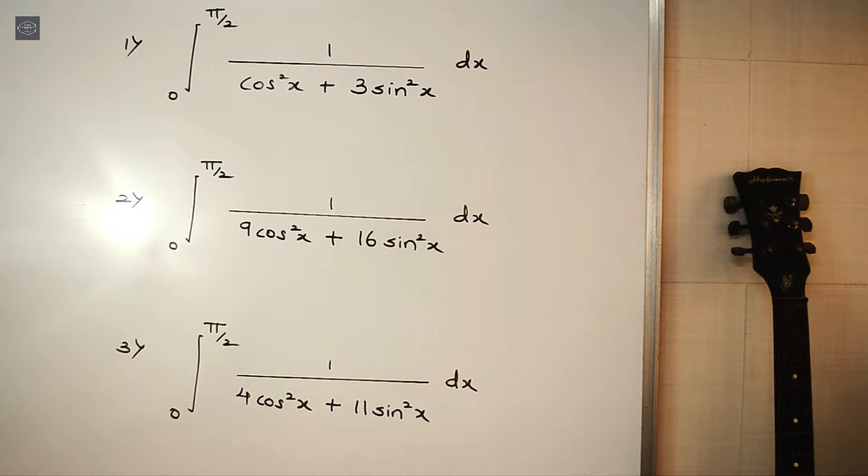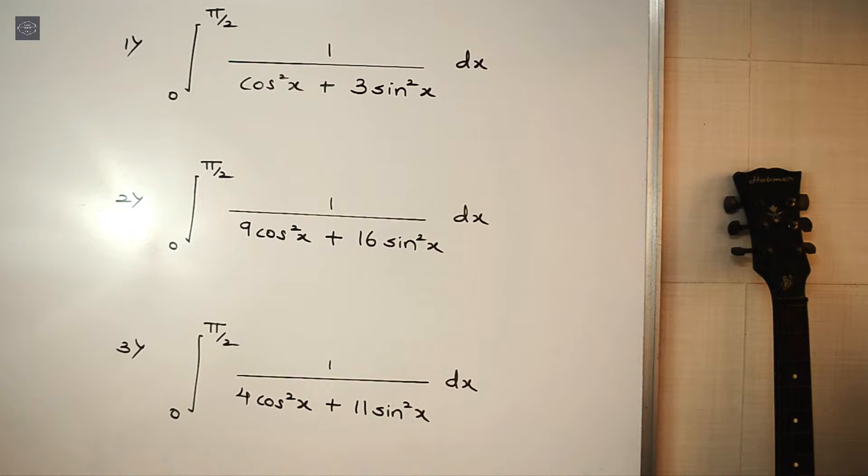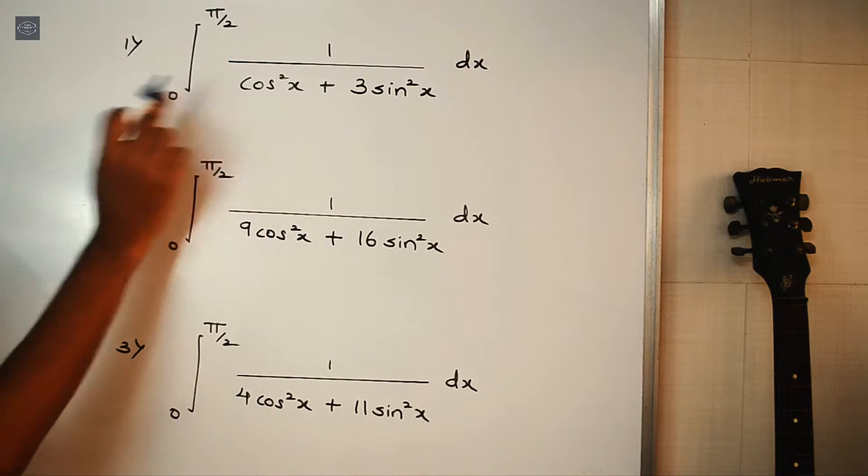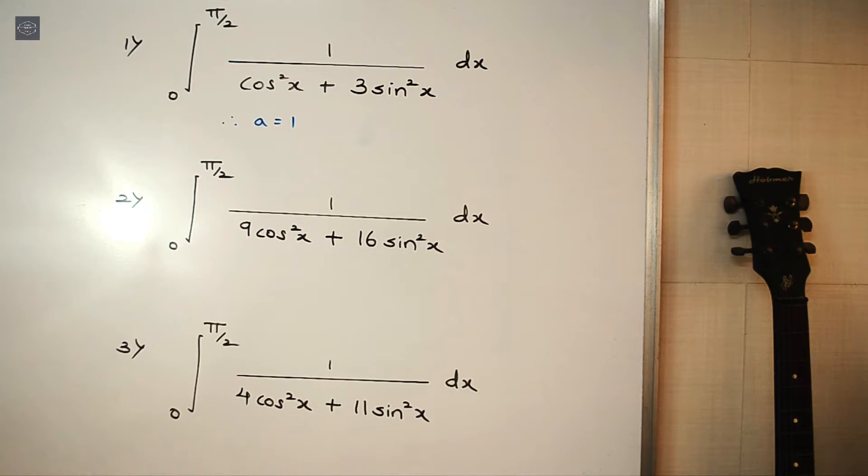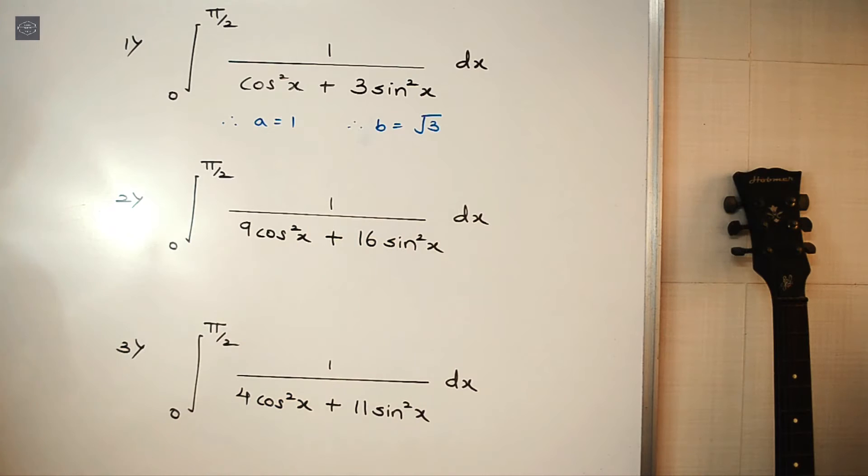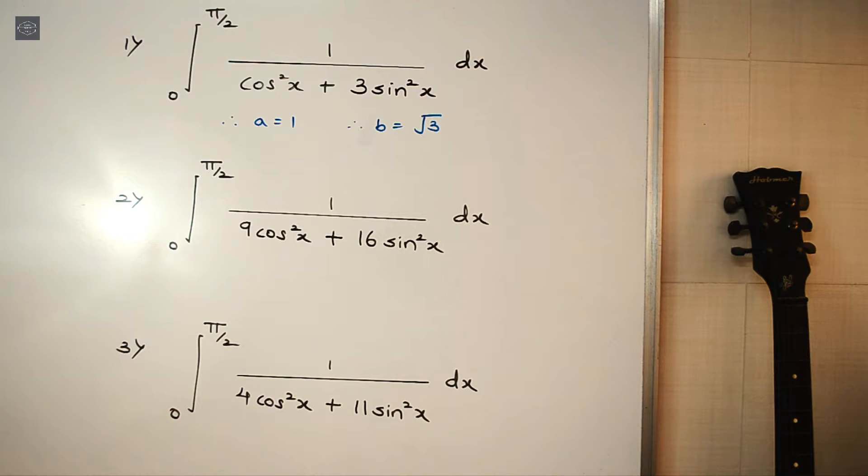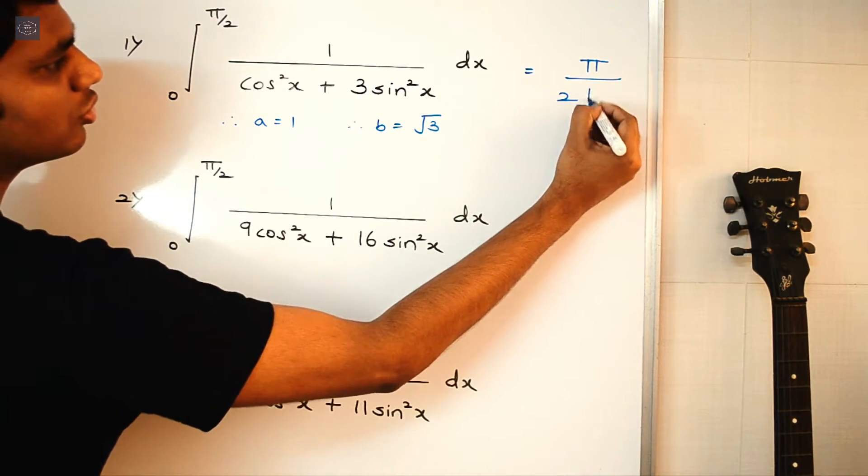Alright guys, so here we have the questions on the board. For the first one, we have integral 0 to π/2, 1 upon (cos²x + 3sin²x). Here we can see a² = 1, so a = 1, and b² = 3, so b = √3. Therefore, the answer for the first integral is π/(2√3).